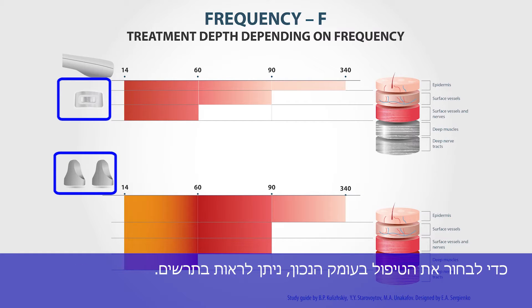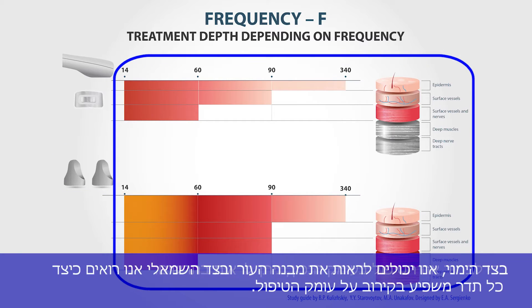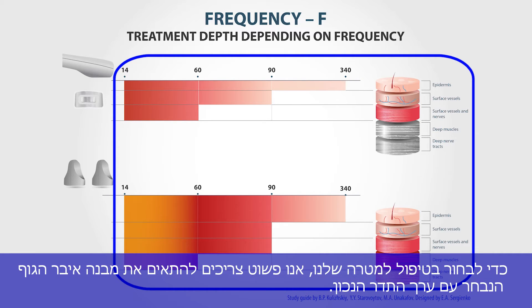To choose the correct treatment depth, you can look at these diagrams. On the right we can see the skin structures, and on the left we can see how deep each frequency is approximately. To make the right choice depending on our target, we simply need to match the desired body structure with the right frequency value.